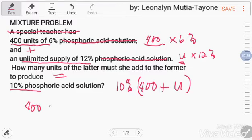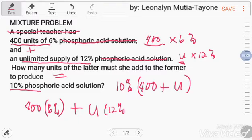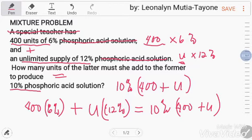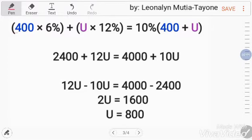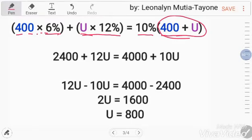400 of 6% plus the amount you'll add that has 12% of phosphoric acid must be equal to 10% of 400 plus the unlimited supply or the unit that you don't know yet. So this is now our equation. 400 times 6%, U or our X times 12%, 10% times the 400 because it will be added plus the U or X that we're looking for.